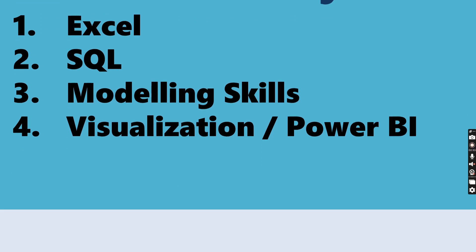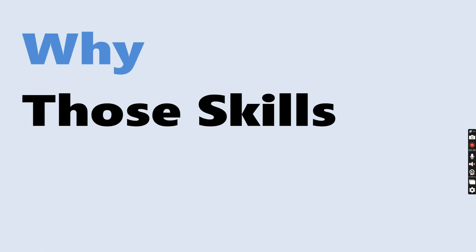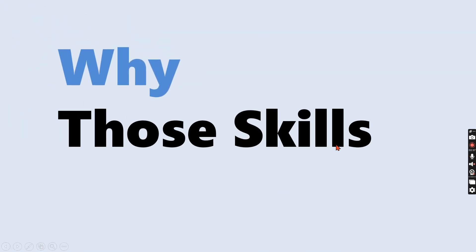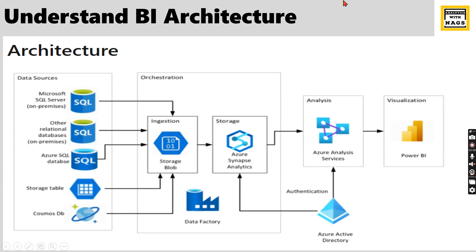Now let's look at why you need those skills by understanding the BI architecture. We have sources, and you need to merge the data somewhere — put it in data lakes or create a data warehouse — then create a model, and then visualize. This is the typical architecture of BI.